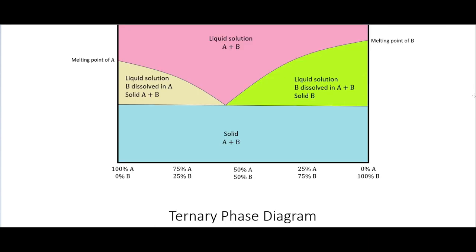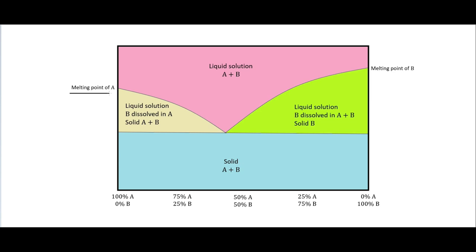Looking at the melting phase diagram: if we have mostly A with some impurity B, we end up with a liquid solution with B dissolved in A, plus some remaining solid A and solid B. When you haven't completely melted but have started melting, there's still solid A, but liquid A has B dissolved in it. Conversely, if we have mostly B with some A impurity, we get a liquid solution with solid B still present — B dissolved in A plus B.